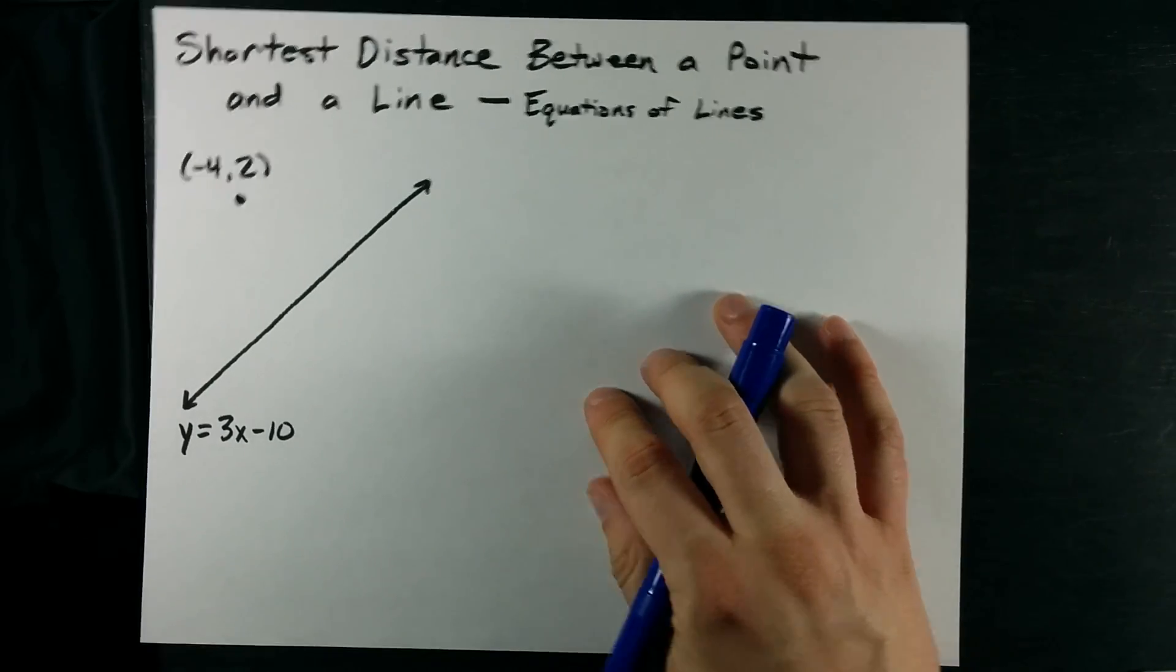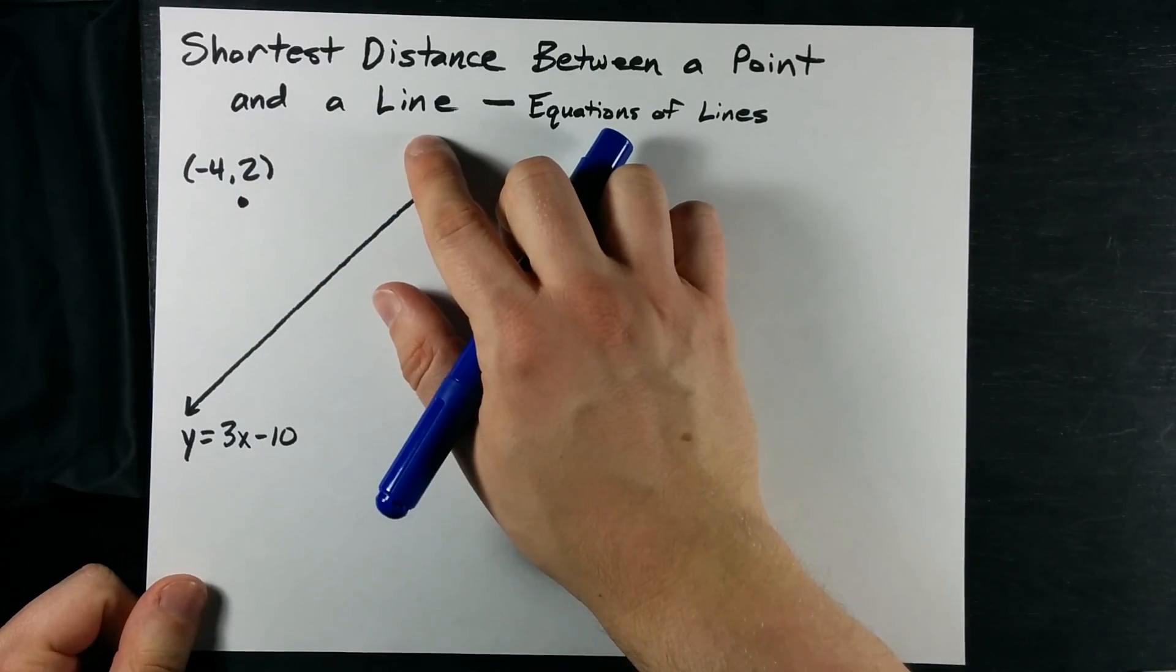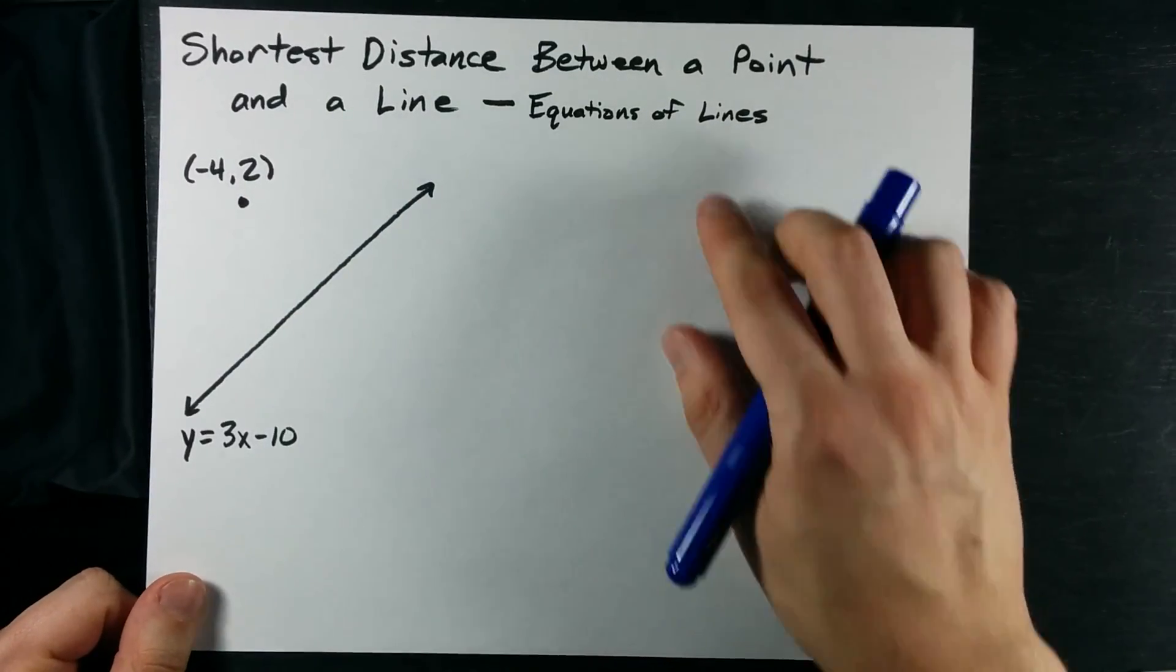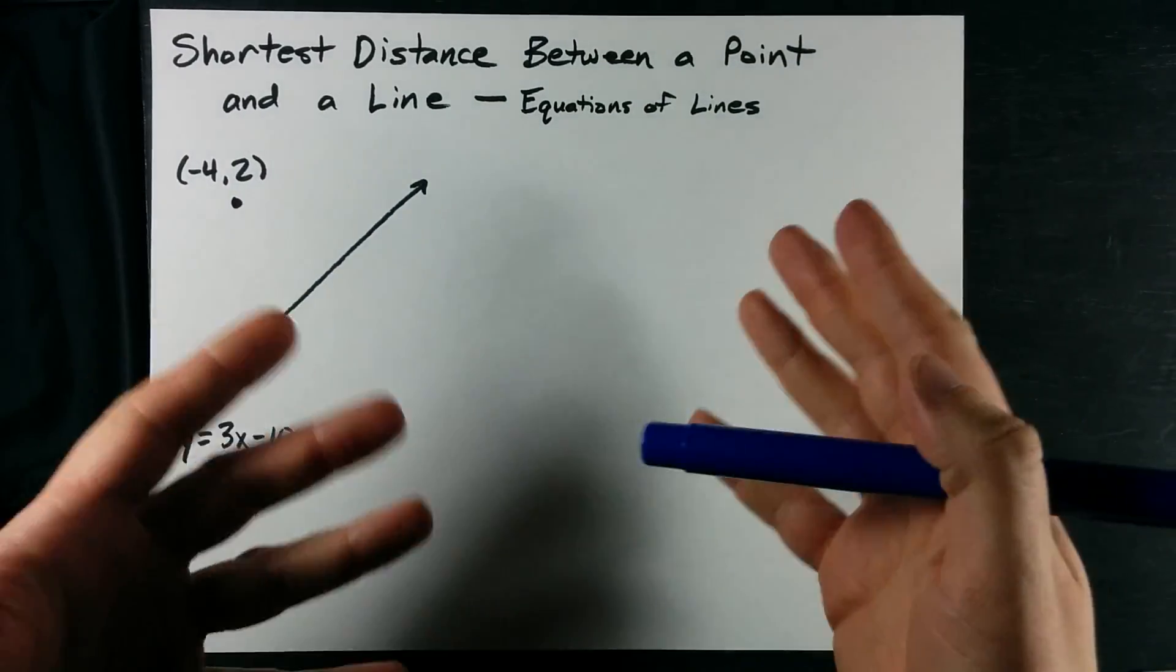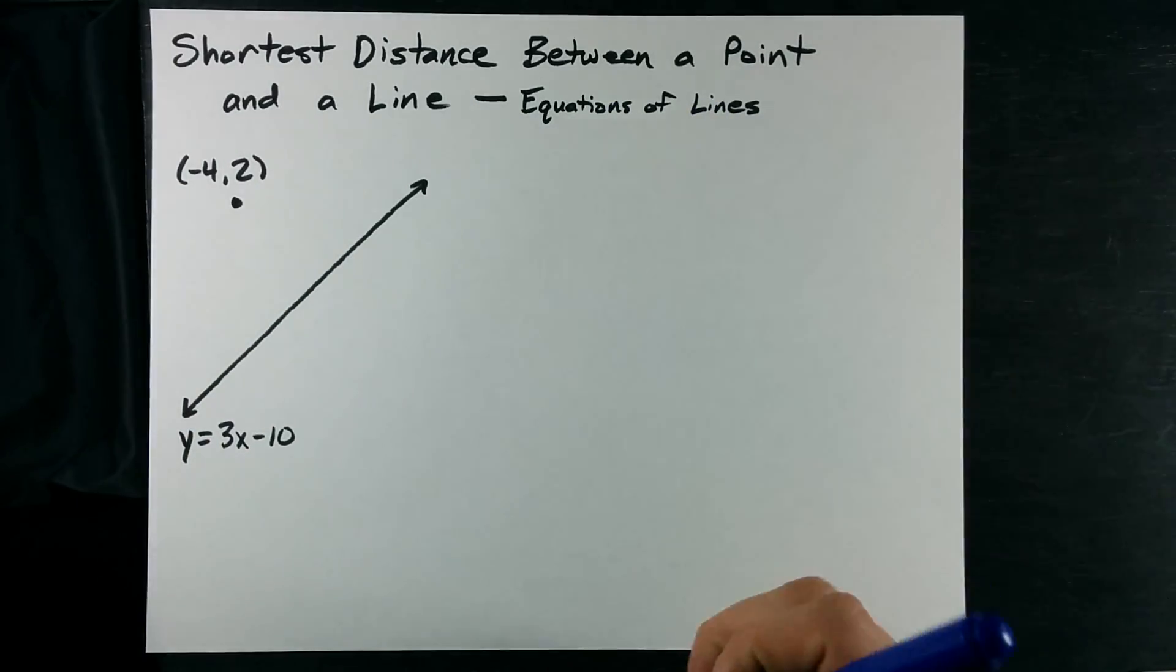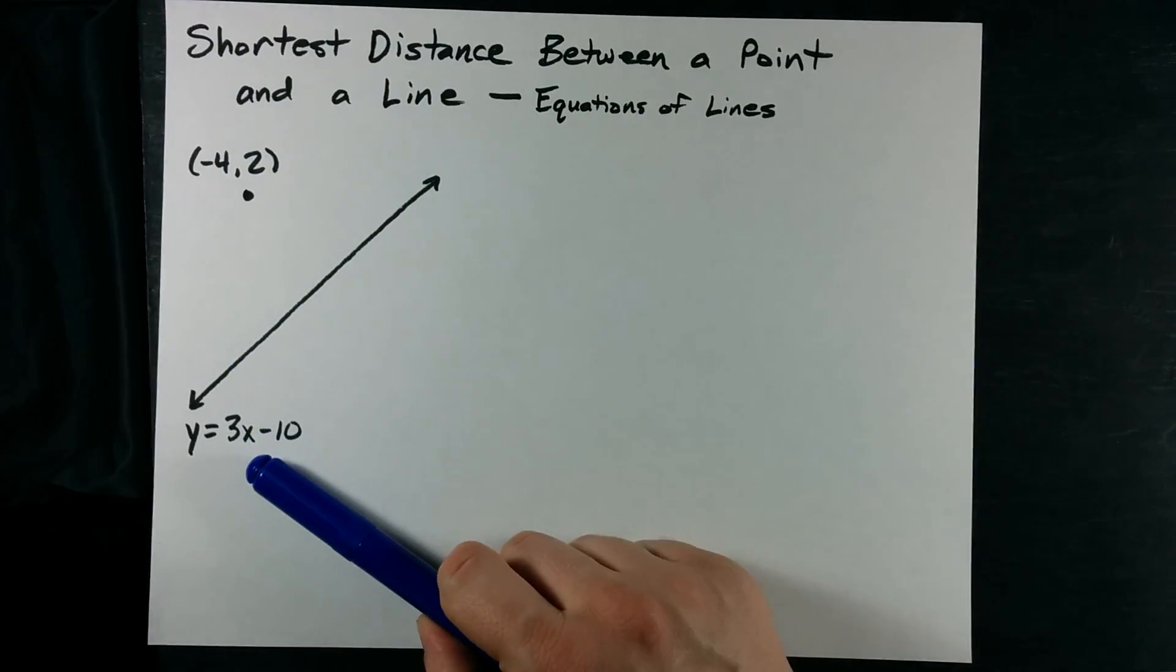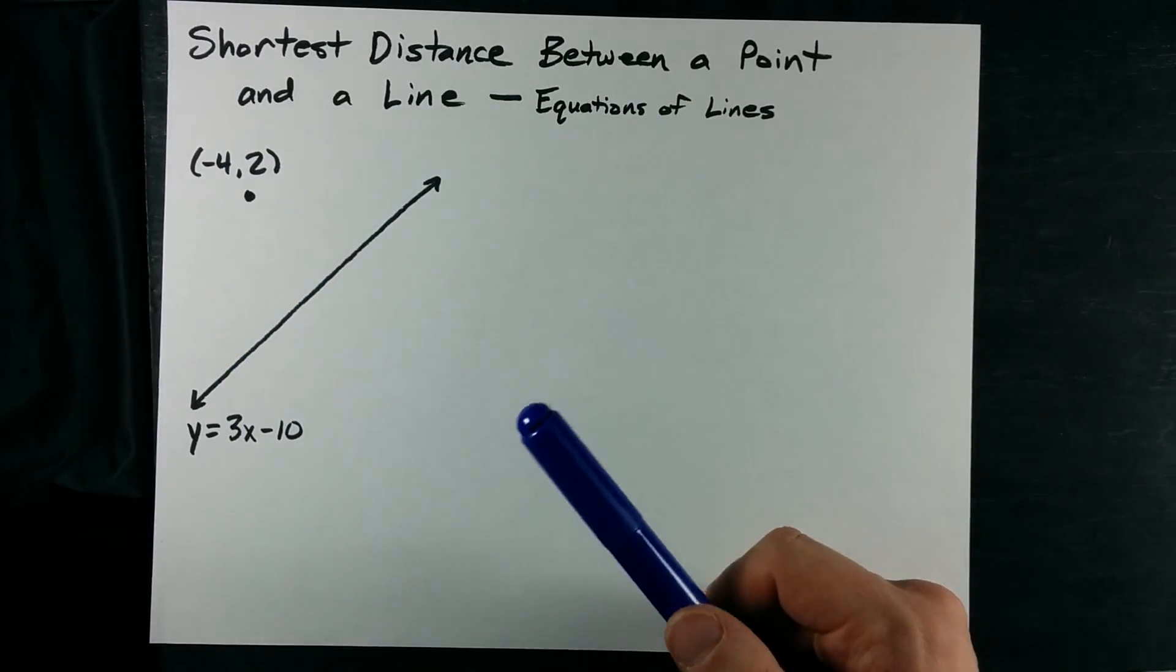There are a bunch of ways you can solve for the shortest distance between some point and a line. The easiest way, the way that most grade 10 students should be able to do, is just with equations of lines. Here's a point, I just picked a random one, and here's an equation of a line, I also just picked a random one.